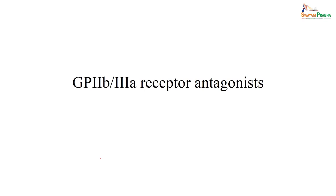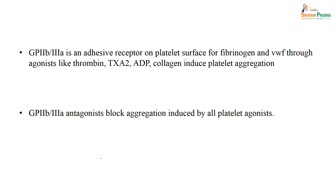The newer group used is glycoprotein 2B/3A receptor antagonists. Glycoprotein 2B/3A receptors are adhesive receptors on the platelet surface. For fibrinogen binding via VWF factor, agonists like thrombin, thromboxane A2, ADP, or collagen-induced signals enhance platelet aggregation. So by giving antagonists to block the aggregation induced by platelet agonists, these drugs are used in various thromboembolic phenomena.